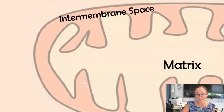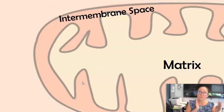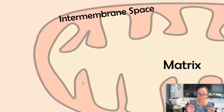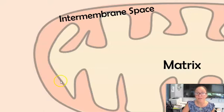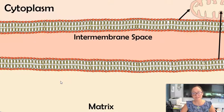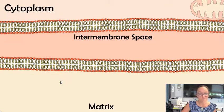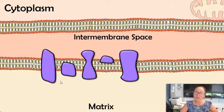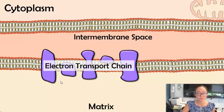We're going to zoom into the matrix of the mitochondria. Looking at the mitochondria, there are two membranes: the outer membrane and the inner membrane. The matrix is the yellow part, and the space between the membranes is called the intermembrane space. I've color-coded it — the top layer of phospholipids is on the outside, and this one is the inner membrane. Within the inner membrane, we have proteins or enzymes that make up the electron transport chain.